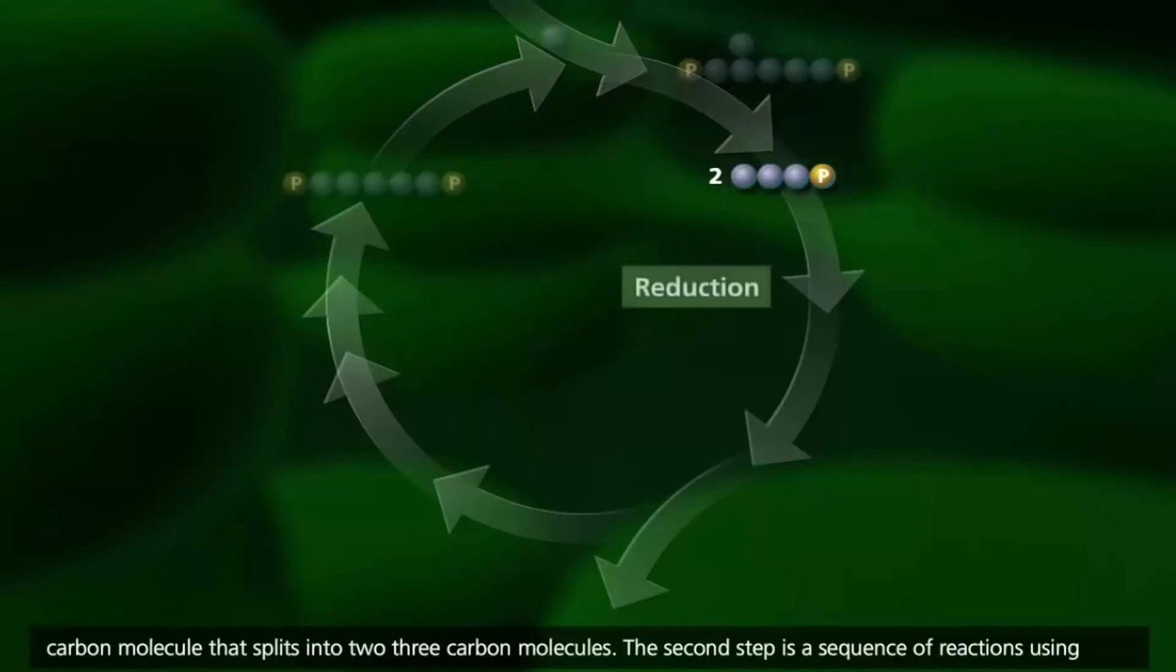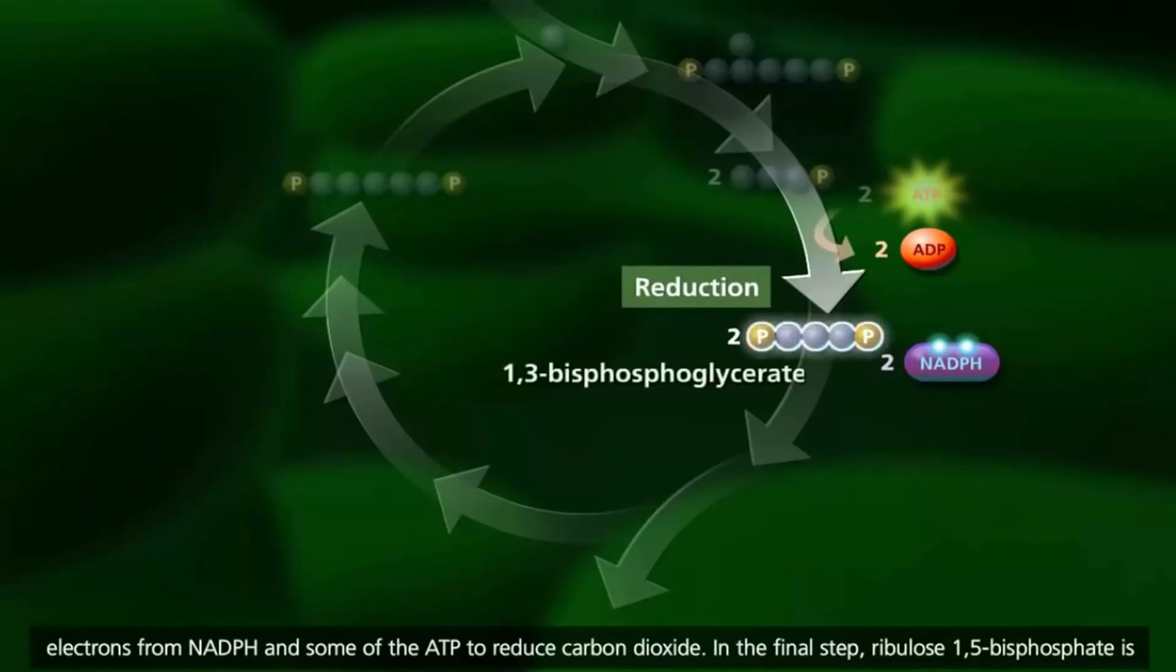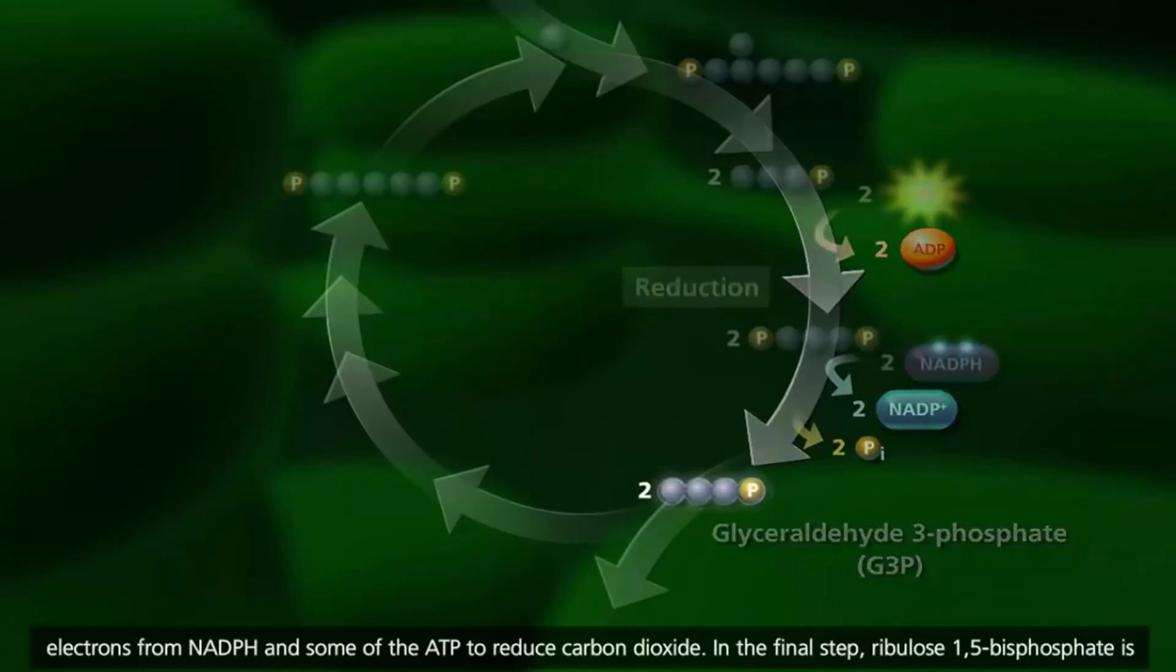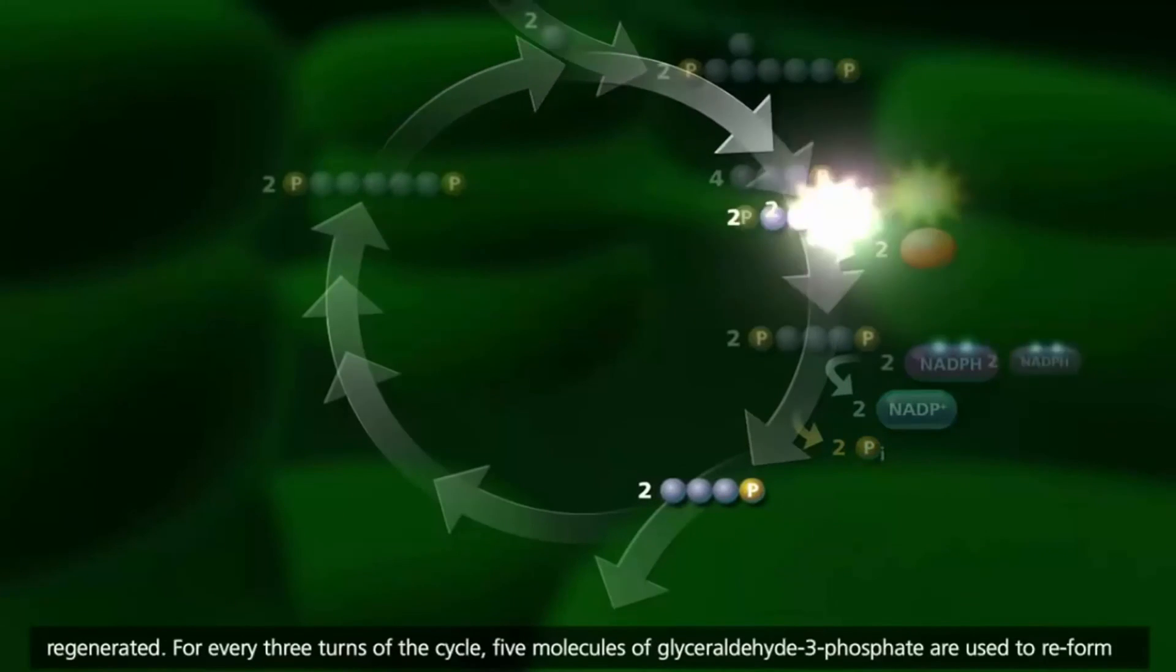The second step is a sequence of reactions using electrons from NADPH and some of the ATP to reduce carbon dioxide. In the final step, ribulose-1,5-bisphosphate is regenerated.